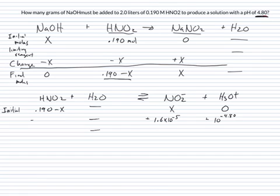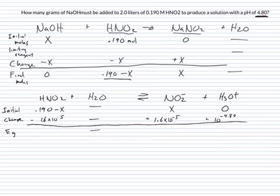Our nitrous acid is going to go down that same amount. Because again, that's a 1 to 1 ratio. So that's our change. And so at equilibrium for the acid, we've got 0.190 minus X minus 1.6 times 10 to the minus 5th. So you can see that the 1.6 times 10 to the minus 5th is really small compared to the acid, so we can neglect that in that case. And then for our conjugate base, it's going to be X plus 1.6 times 10 to the minus 5th.